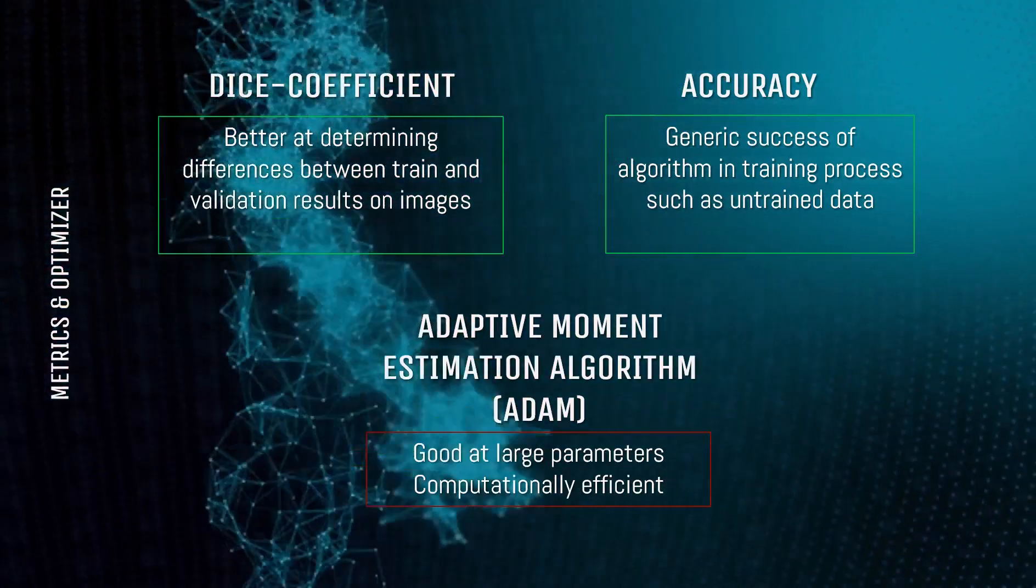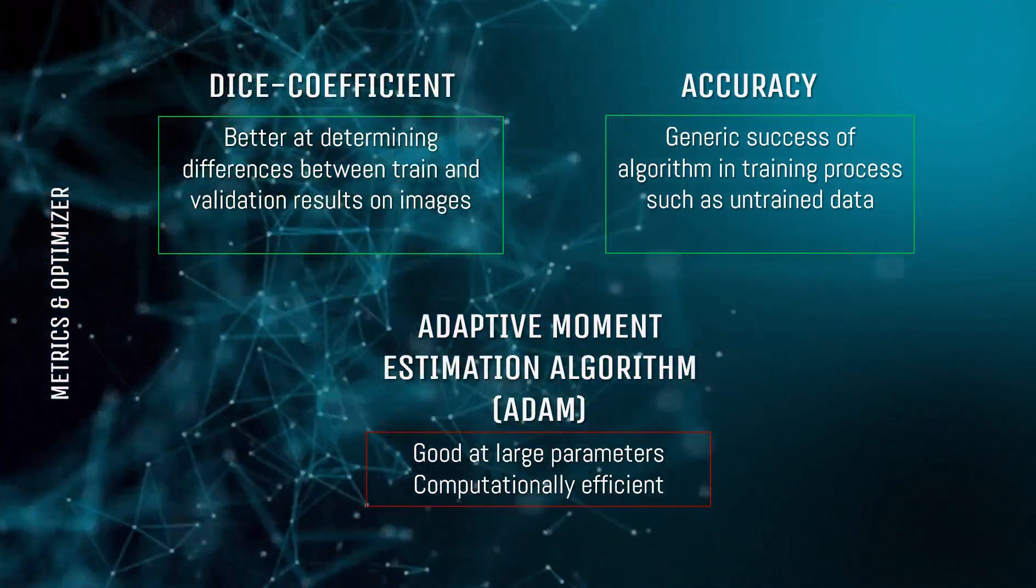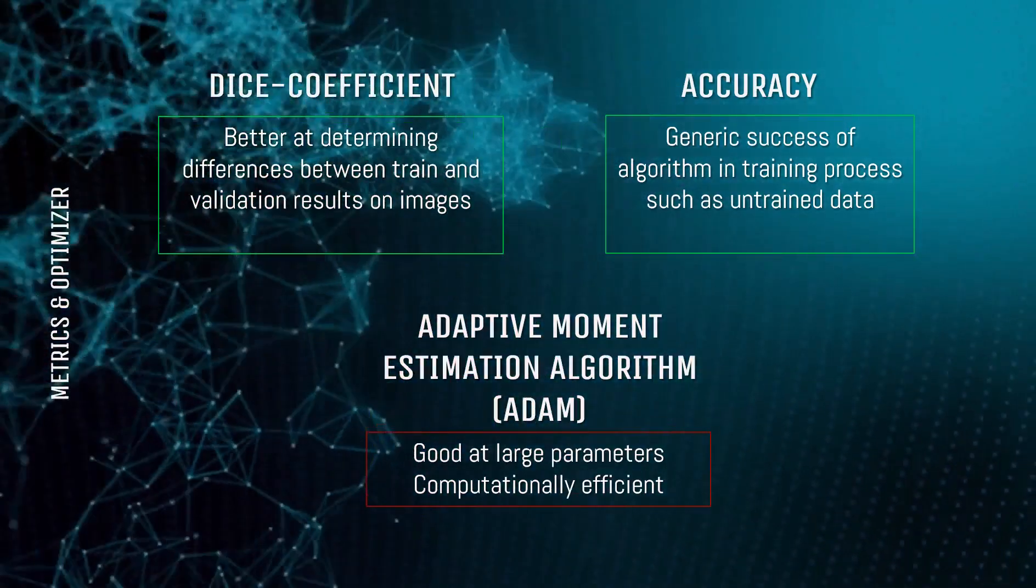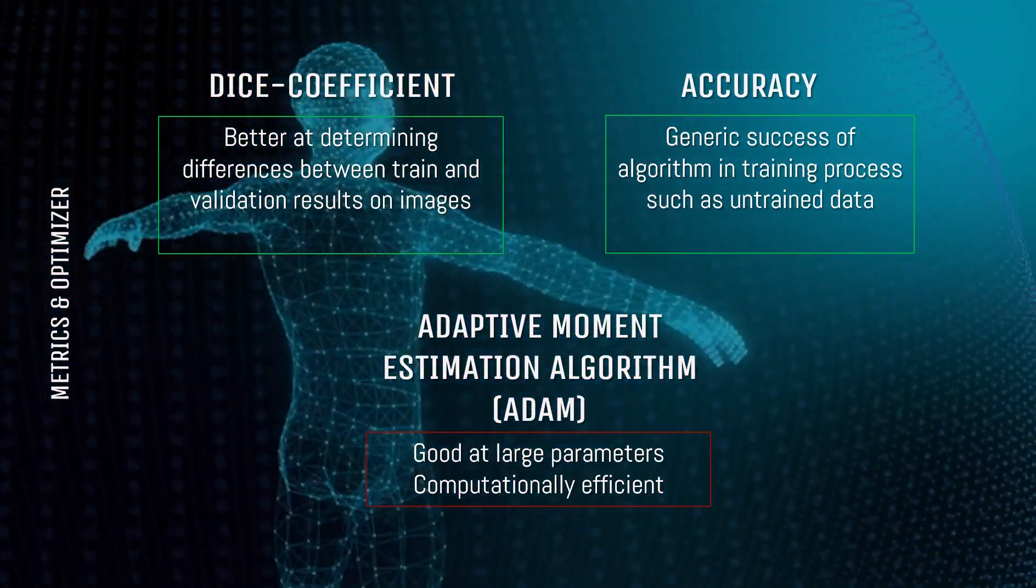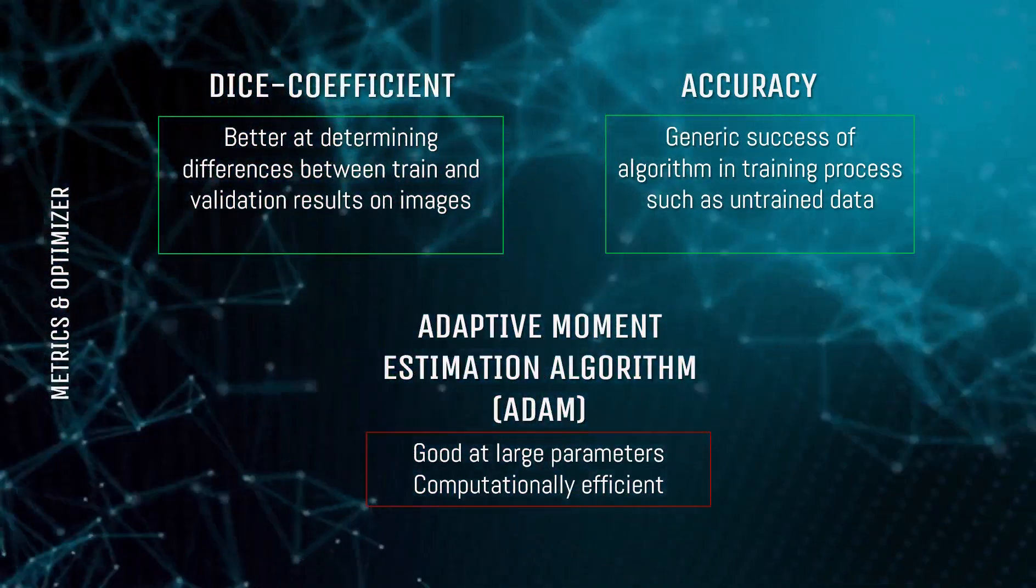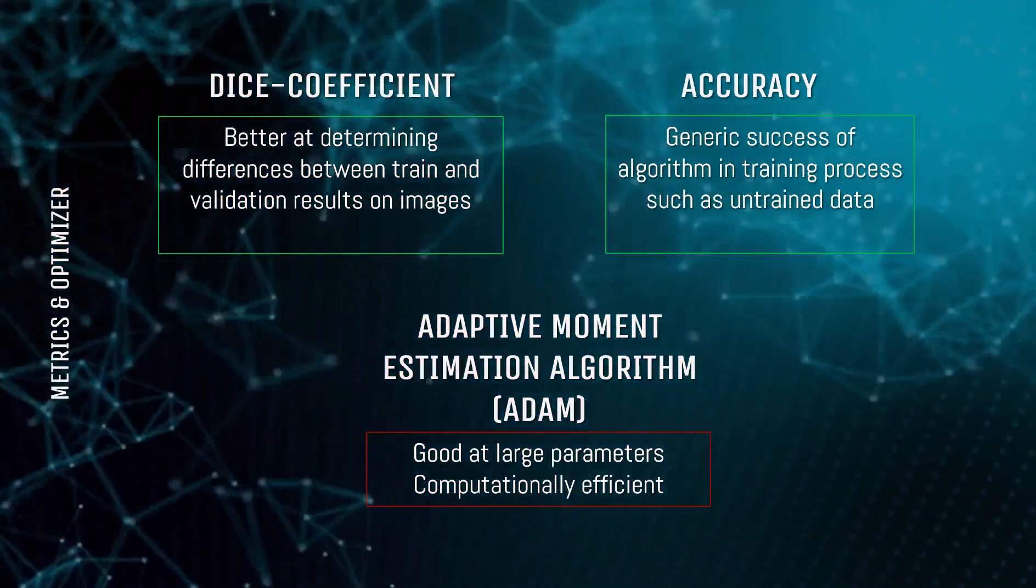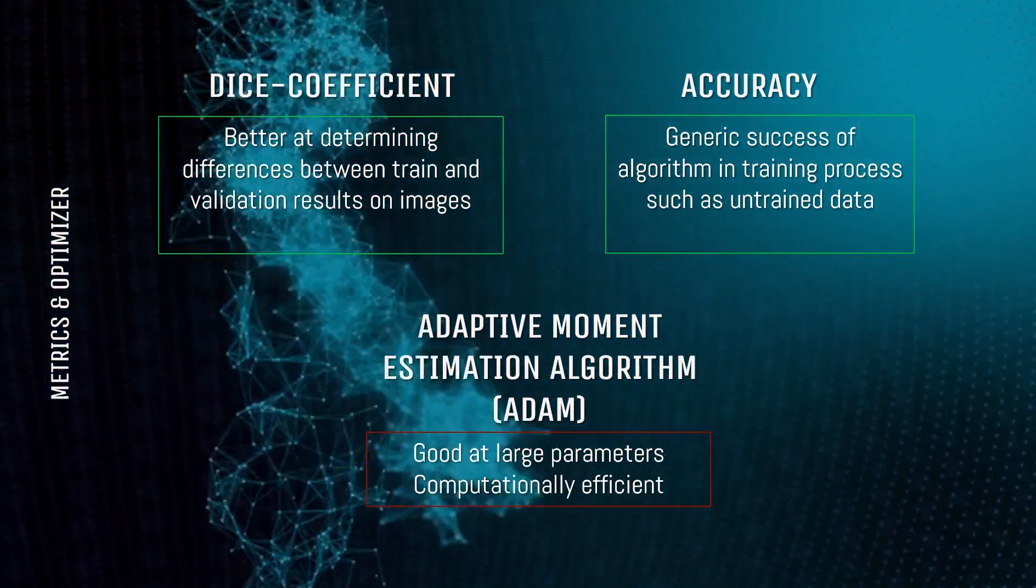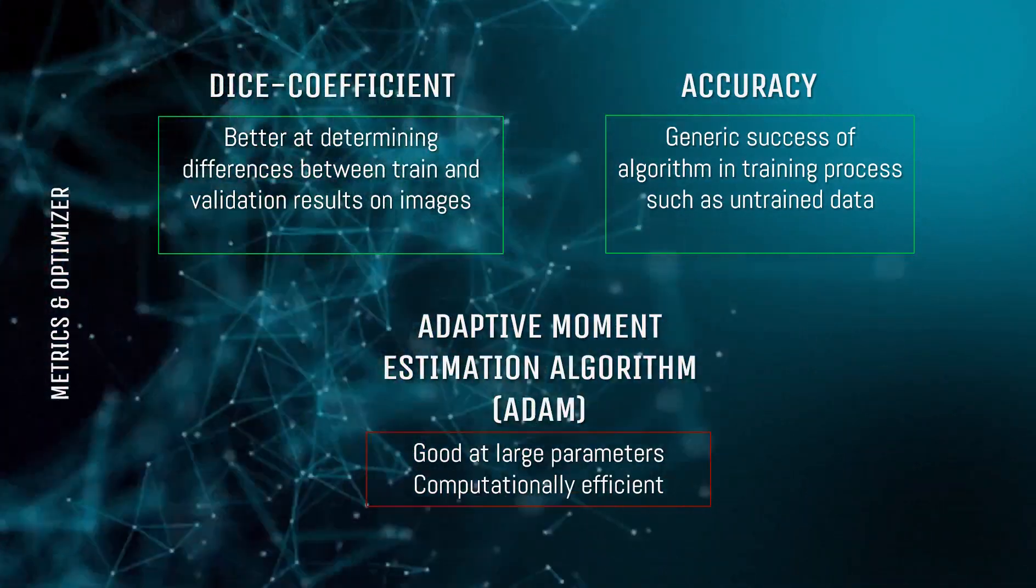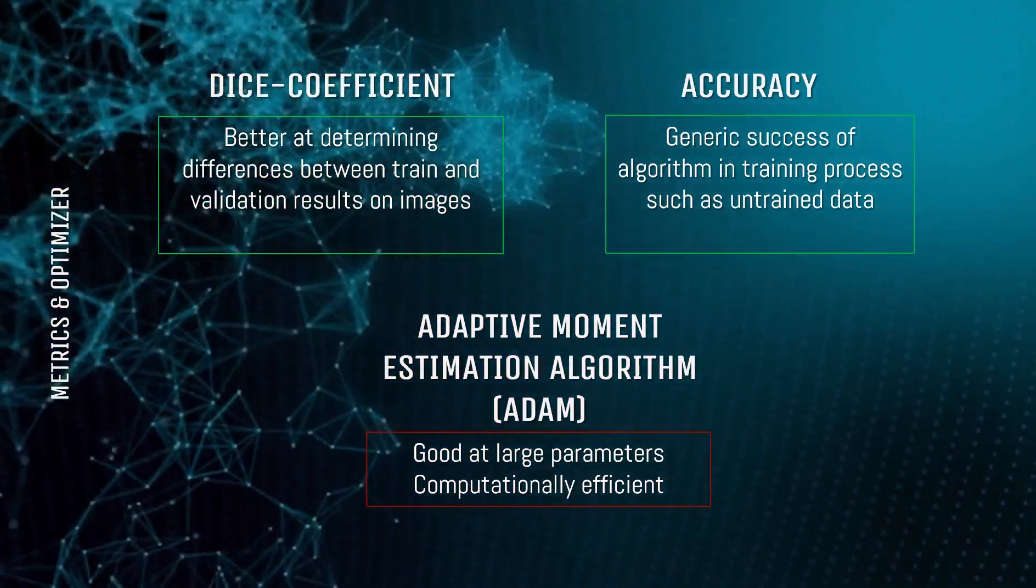In the training and validation processes, we made our comparisons between architectures with dice coefficient and accuracy values. Accuracy alone has not been enough criterion for image segmentation. Therefore, we included dice, which is a coefficient that provides punishment during the calculation of false positive values in our comparisons.